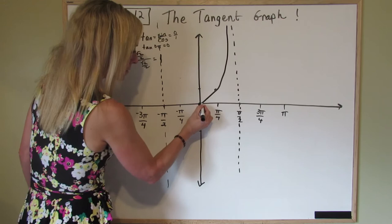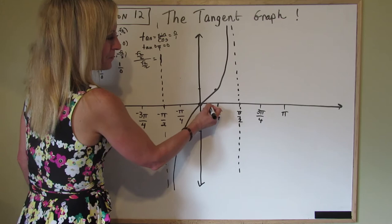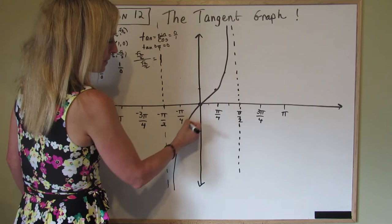It goes like this. And I promise you if you put in your pi over 6, this will line up. If you put in your pi over 3, they all line up just like that.